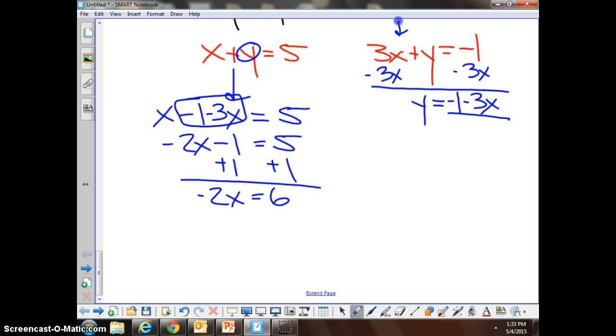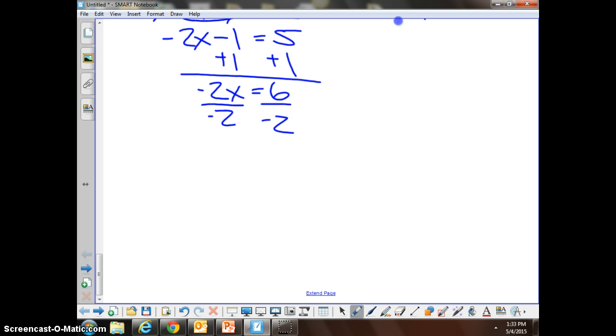Divide by negative 2. Beautiful. And x equals negative 3. Okay, so we've got what we think is the x side of the ordered pair. Now what do you want to do, Matthew?